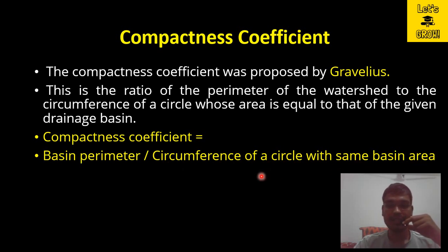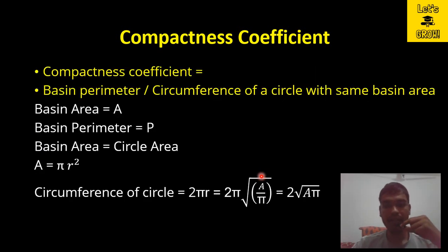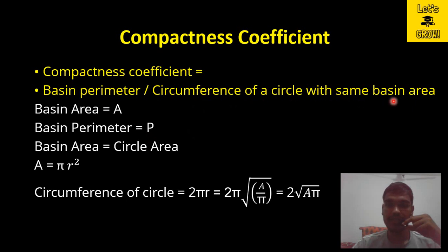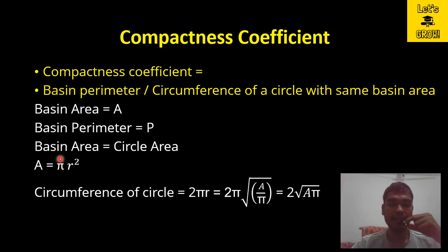Let us investigate the mathematical formula for the compactness coefficient for a given catchment. Suppose we have a catchment or basin where the area of the basin is capital A and the perimeter of the basin is small p. In the denominator, there is the circumference of a circle with the same basin area. We equate the basin area equal to the circle area to determine that circumference.